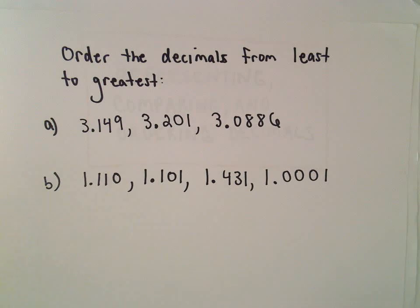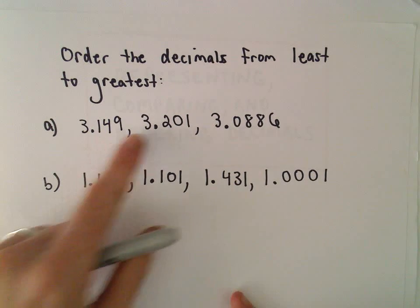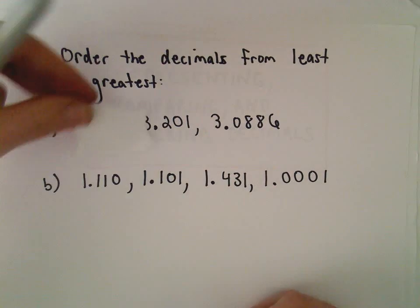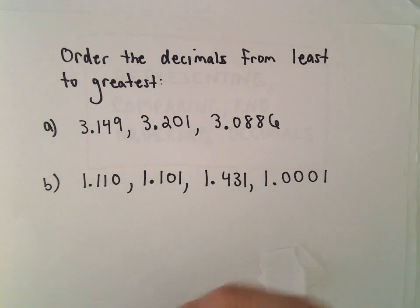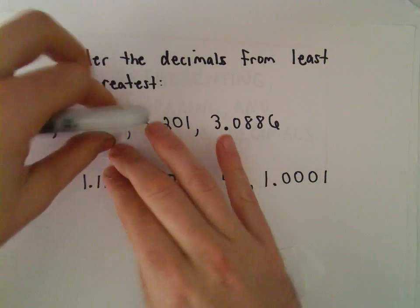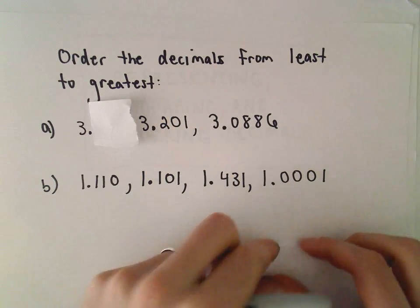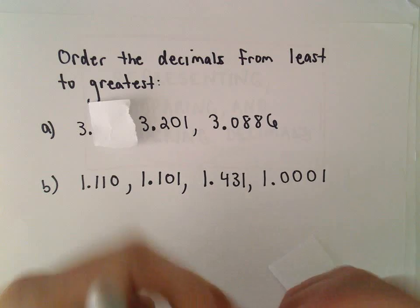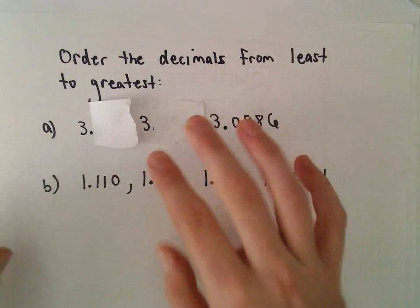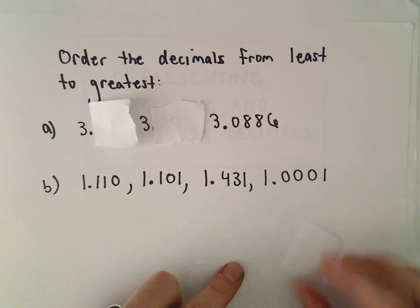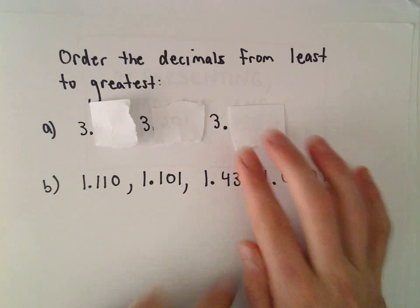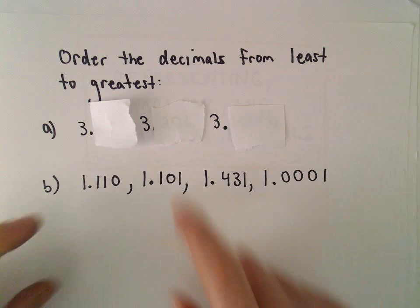So I look at the whole number part. Well, they've all got a 3, okay? So they all start with 3. No problem there. And then I just kind of look at them, sort of one digit at a time, and I'm basically looking for the smallest one. Okay, so they've all got a 3, so in that sense to me they're all equal.